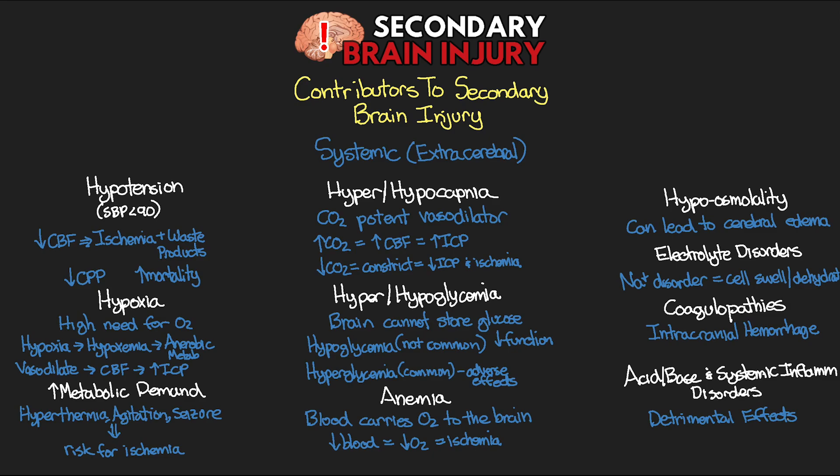Hopefully now you can see why these different systemic things happening could ultimately lead to additional damage to the brain. These, along with the neurological as well as the molecular and biochemical mechanisms, can all come together as things we're going to be worried about, watching for, and trying to prevent in order to protect the patient's brain. Coming up in the next lesson I'm going to go through and talk about the different strategies and ways in which we manage patients with TBI.